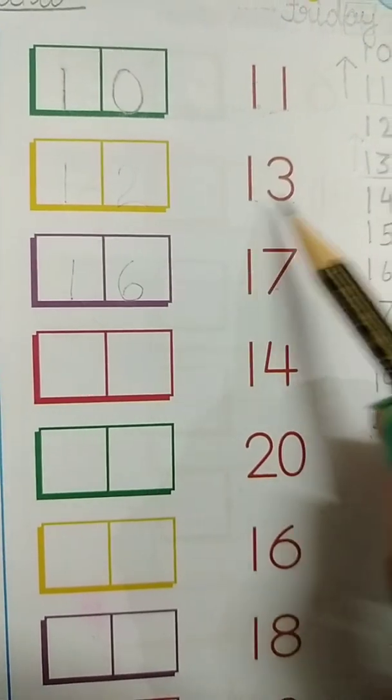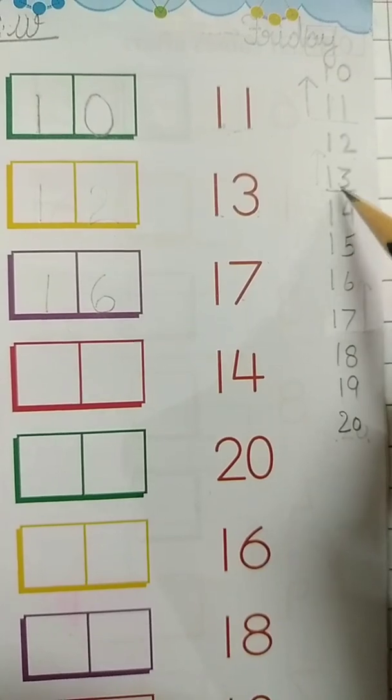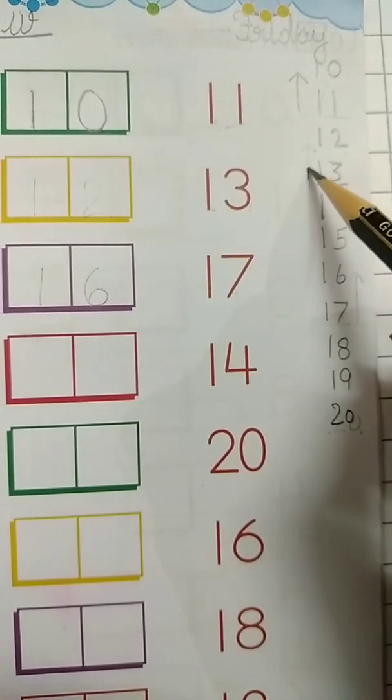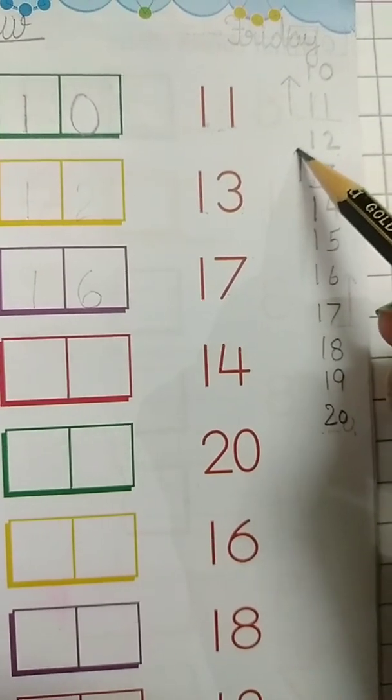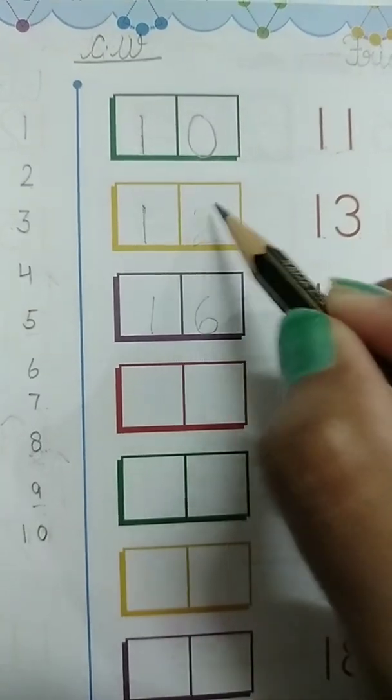Like this. This is 13. So where is 13? Here is. To find out what comes before 13, I will move one step backward and I get 12. So you all will write 12.